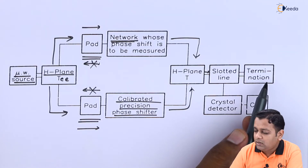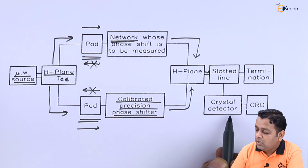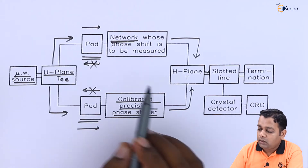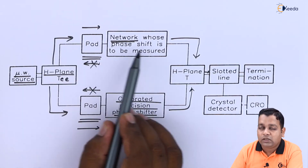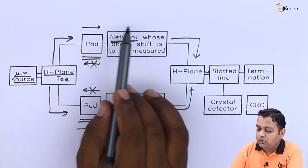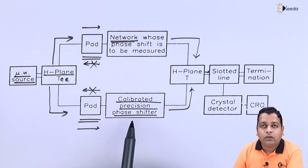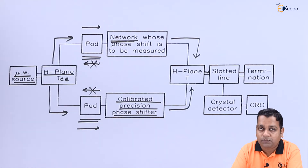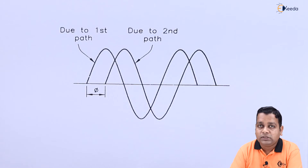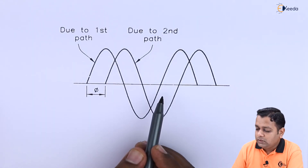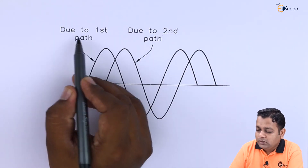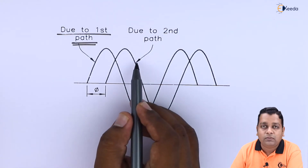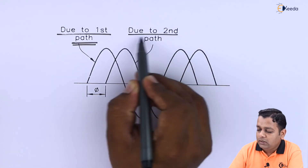The slotted line is terminated at the other end, and a crystal detector mounted on the slotted line provides a display to the CRO. The CRO displays the two signals. When the network under test introduces a phase shift and the phase shifter is not yet adjusted, the two signals appear with a phase difference on the CRO. The first signal shown with a solid line corresponds to the first path, while the second signal corresponds to the path through the calibrated phase shifter.